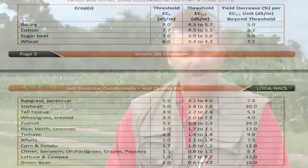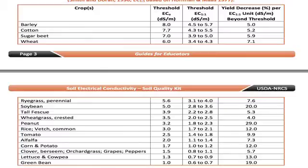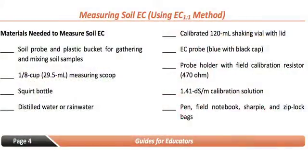Lastly, we have the crops table, with different tolerance levels from the most tolerant — barley — to the least tolerant — green beans. There are some discussion questions with your students, and then what's needed for the test: the soil probe, the scoop, the squirt bottle, the distilled rainwater — all the materials that you need will be shown in the test itself.